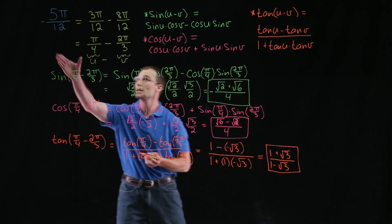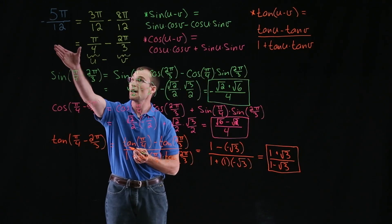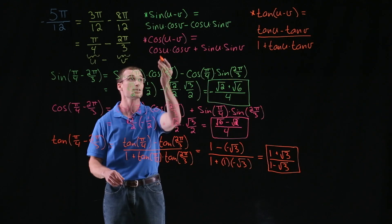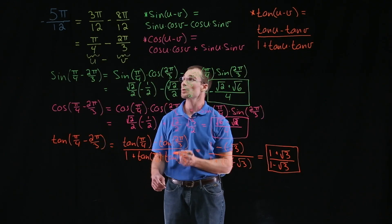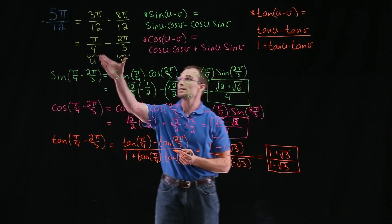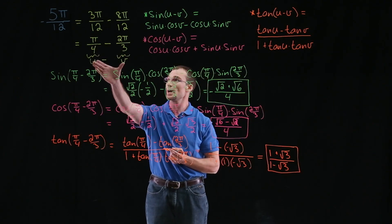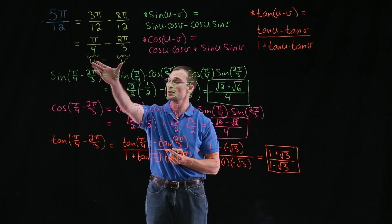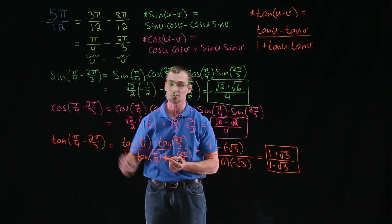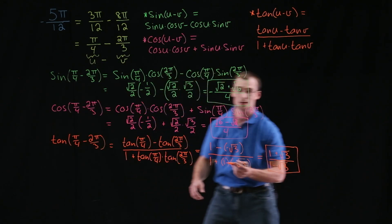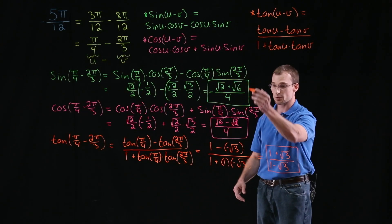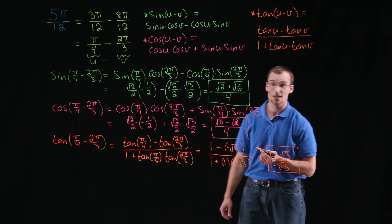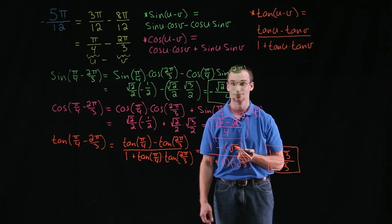And simplifying this, our two negatives in the numerator are going to cancel, giving us 1 plus square root of 3, and we have 1 minus square root of 3 in the denominator. So from our angle negative 5 pi over 12, using the sum and difference formulas, we wrote the angle as a difference between two angles — pi over 4 and 2 pi over 3 — and simplified all of them, getting our results for sine, cosine, and tangent. Thank you very much.